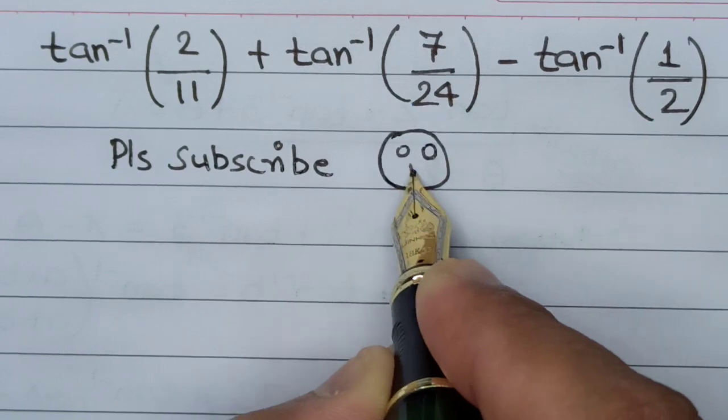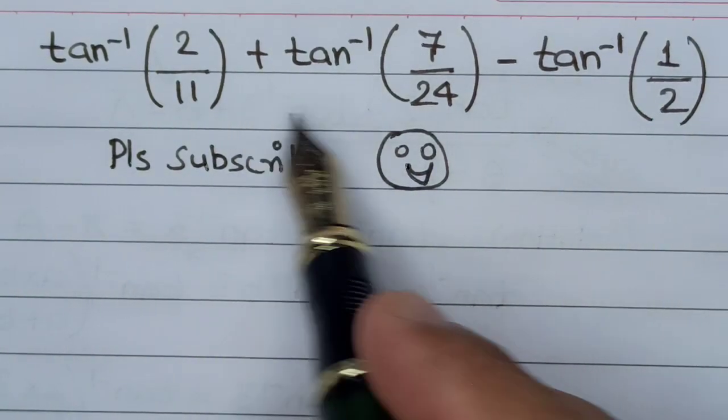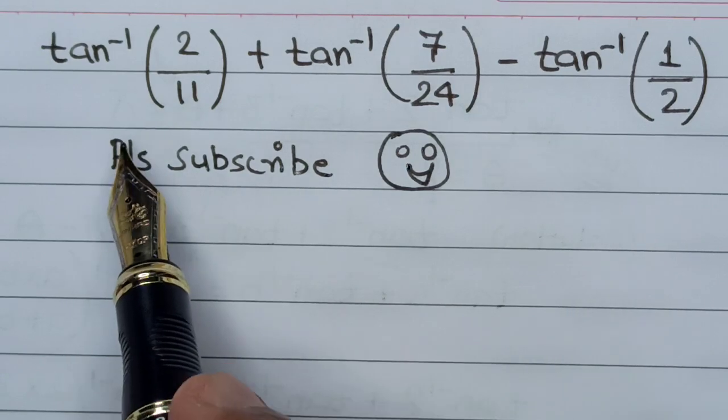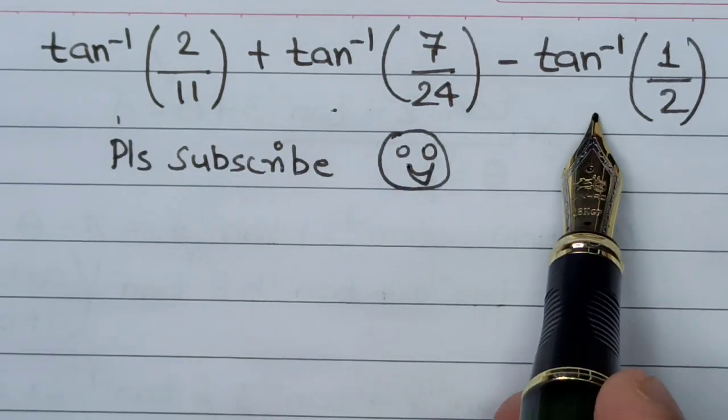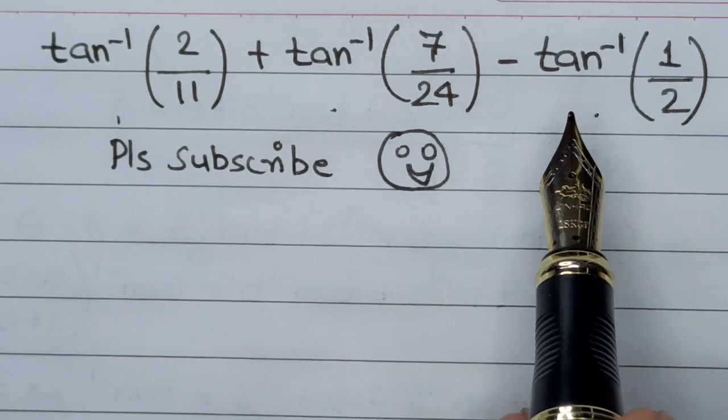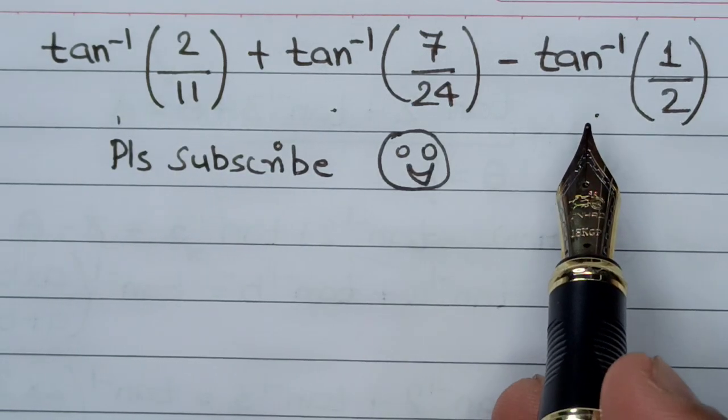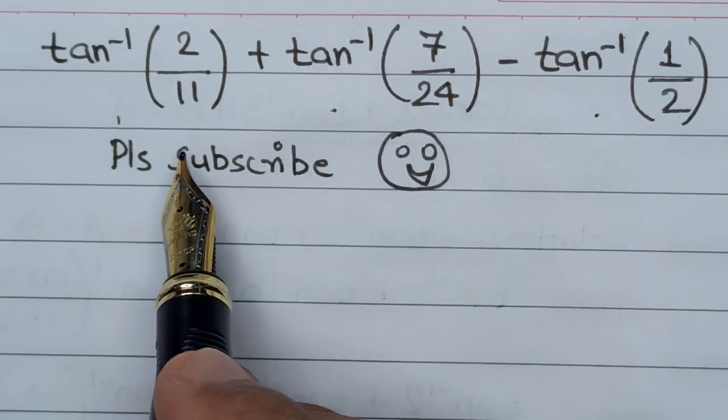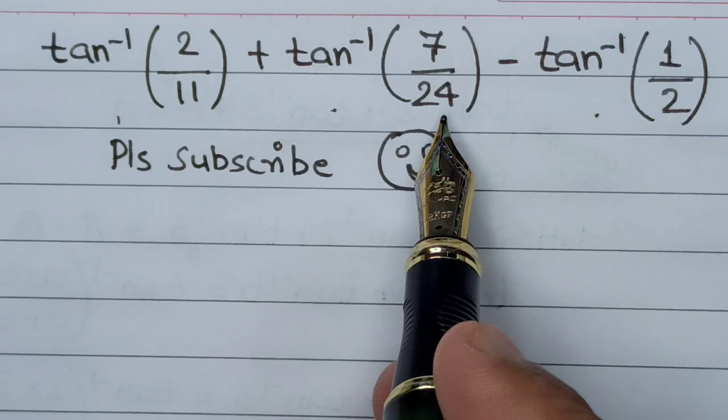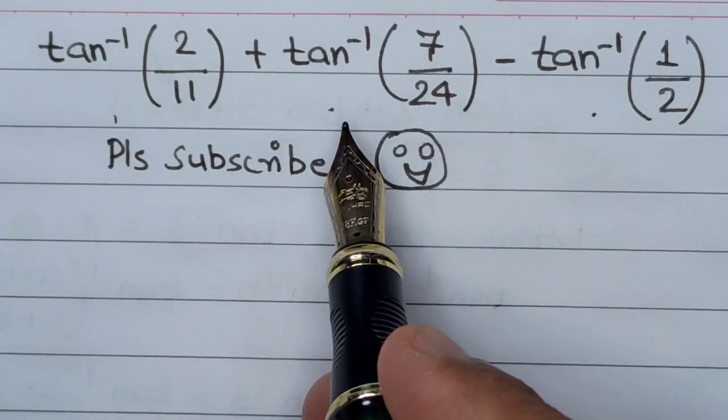Let's start the solution. Whenever three different identities are joined together in a single trigonometric equation, the biggest challenge is to figure out which two have to be selected.